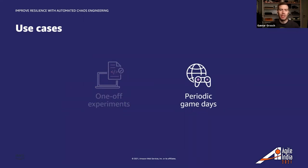The other very common use case is to use chaos engineering as part of your game days. A game day is the process of rehearsing ahead of an event by creating the anticipated conditions, then observing how effectively the team and the system respond. An event could be an unusually high traffic day, a new launch, a failure you've seen in the past, or something else. You can use chaos engineering experiments to run a game day by creating the event conditions and monitoring the performance of your system and team.